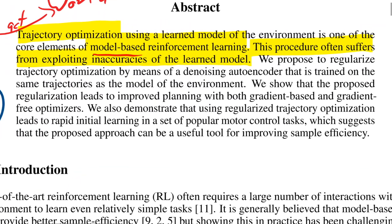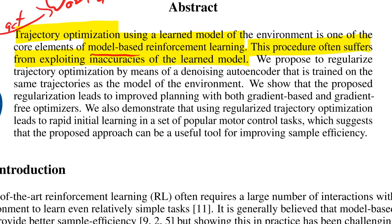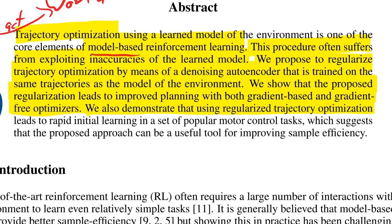They propose to solve this by regularizing trajectory optimization by means of a denoising autoencoder trained on the same trajectories as the environment model. They show this leads to improved planning with both gradient-based and gradient-free optimizers, and that it leads to rapid initial learning in popular motor control tasks, suggesting it can improve sample efficiency.